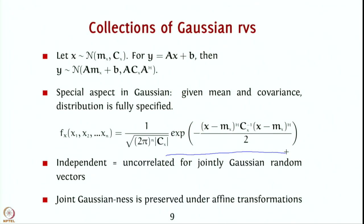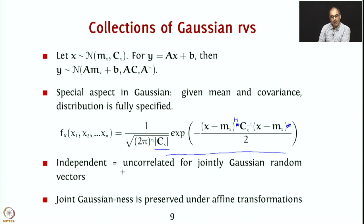Only jointly Gaussian random variables have the multivariate Gaussian PDF: 1 over (root of (2π)^n times determinant of Cx), times exponential of minus one-half times (x − mx)^Hermitian times Cx_inverse times (x − mx). As we discussed at the end of the last lecture, for jointly Gaussian random vectors, independent and uncorrelated are the same thing.